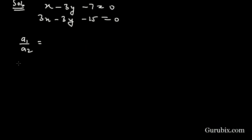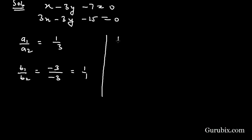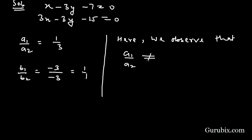Now we shall find the ratios a1 over a2 and b1 over b2. That is 1 over 3, and minus 3 over 3, which simplifies to 1 over 1. Here we observe that a1 over a2 is not equal to b1 over b2.